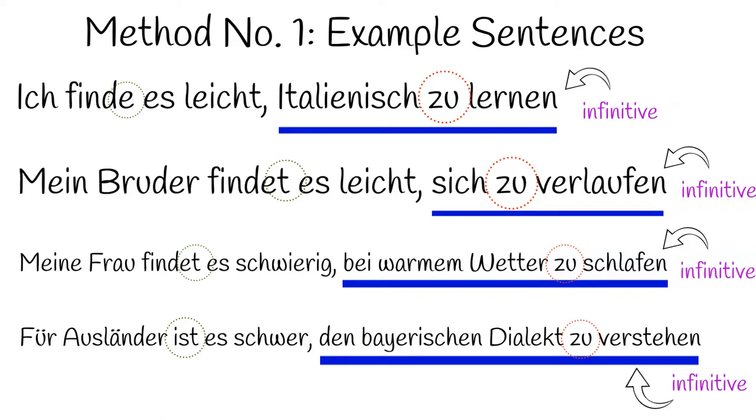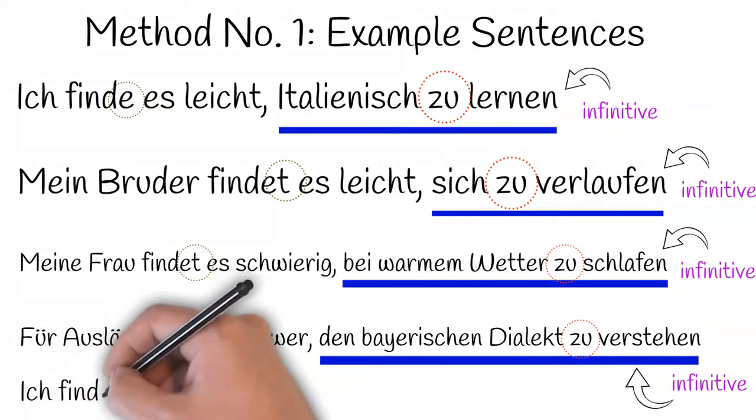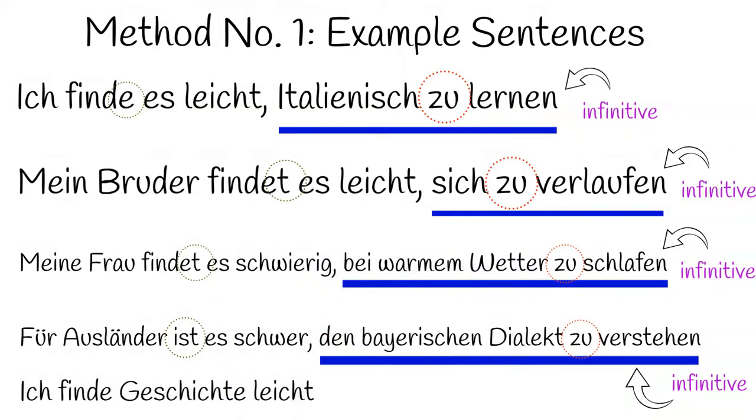Finally, I do want to point out that you can use this method to say very simple and very useful sentences. For example, ich finde Geschichte leicht. I find history easy. You can slot in any noun, singular or plural, in that position rather than including a zu clause to express a more complex idea, but now you know both.